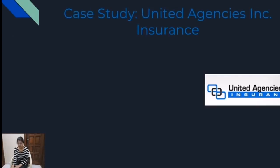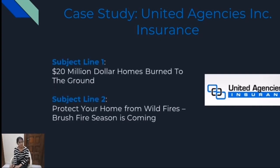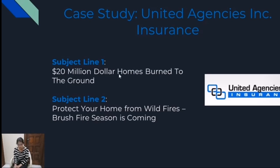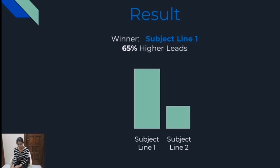As far as emotion is concerned, there's a case I would like to discuss. United Agencies Insurance had A/B testing of two different subject lines for the same email. The first subject line was: '$20 million homes burn to the ground.' The second subject line was: 'Protect your home from wildfires. Brush fire season is coming.' Now, the first subject line created some kind of emotion — a fear. People were like, 'Oh my god, $20 million homes are burned — our home could be next.' So with emotions, you need to play around. And that's the reason subject line one was the winner, generating 65% higher leads for them. So it's very important for your subject line. If you test properly, it's definitely going to lead to higher results — not just your open rate, but eventually your click-through rate and conversion rate as well. Similarly, you can also use an emotional urgency factor in your subject line.